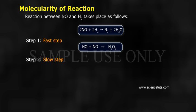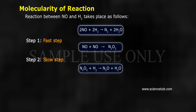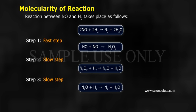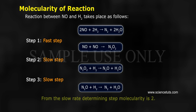Step 2 (slow step): N2O2 plus H2 gives N2O plus H2O. Step 3 (slow step): N2O plus H2 gives N2 plus H2O. From the slow rate determining step, molecularity is 2.